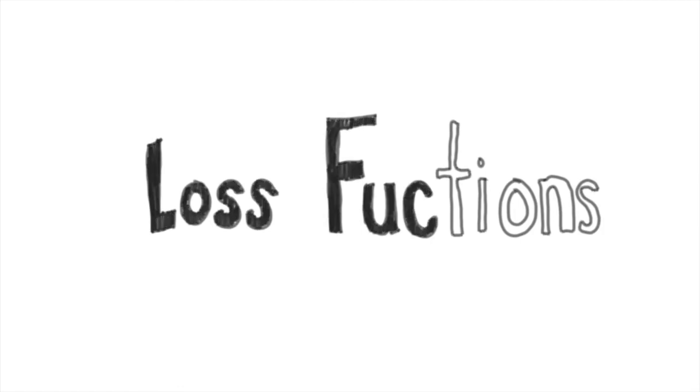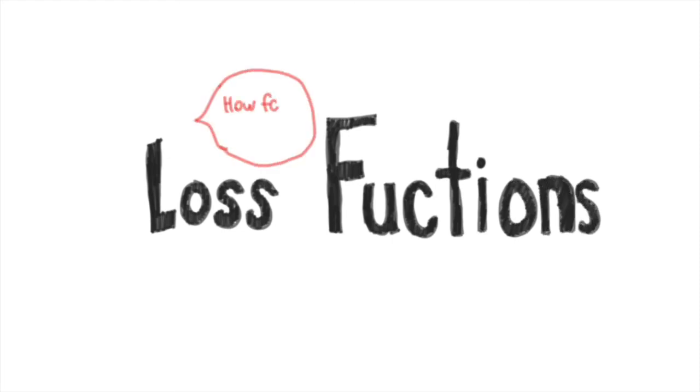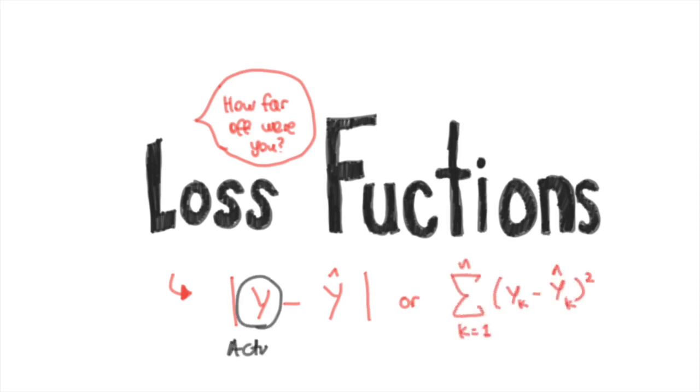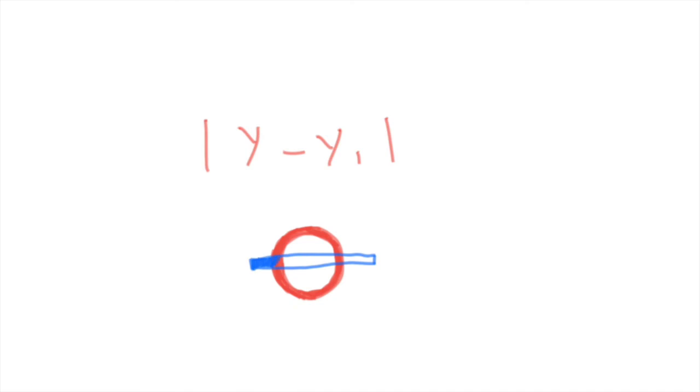So we need something called a loss function or cost function to help us out. The loss function tells us how far off our model's predicted values were compared to the actual values. To find this we might compute the positive difference between the actual value y and the predicted values y hat, or sum the squared variances of the two values, which is loss equals actual minus predicted, or y minus y hat. If we know how much our model is off by, we can try and tweak those weights and bias values so that we can reduce the amount of loss or wrongness that is in our model. Basically we want to close that gap between the predicted values from the model and the actual values. In other words, minimize the value returned by our loss function.